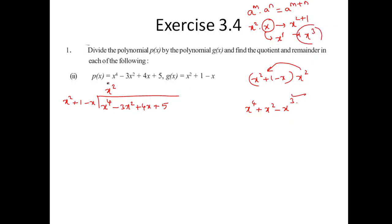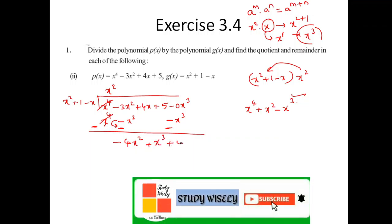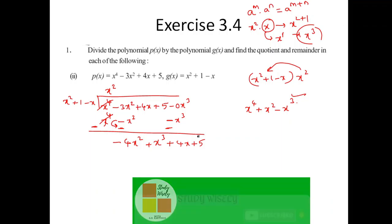Writing out X⁴ minus X² minus X³, and since there's no X³ term in the dividend, I write the X³ term separately. Subtracting the resultant gives minus 4X². The X³ term is left out, so I write it over here to avoid confusion — leaving X³ plus 4X.